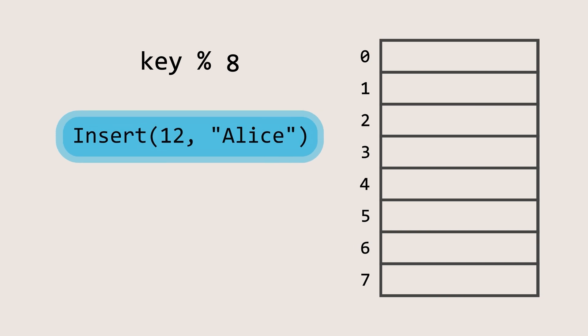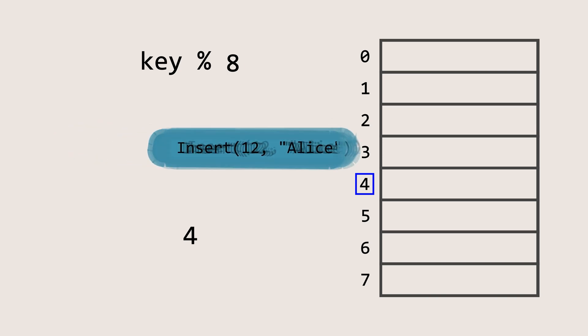Now, let's insert a key-value pair with the key 12 and the value Alice. We'll pass the key 12 into our hash function, and the output of the hash function will determine the index of the array where the value Alice will be stored. Here, the output is 4, which means we need to store this key-value pair at index 4 of the array.